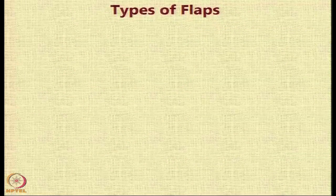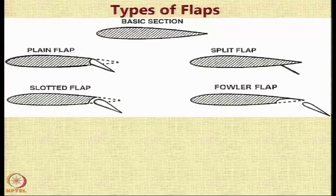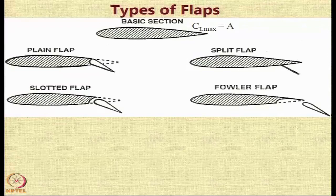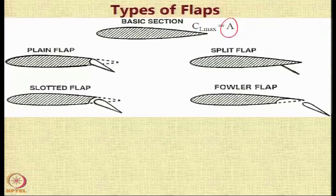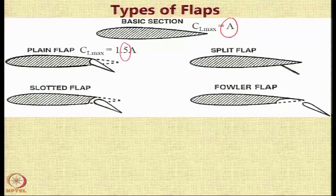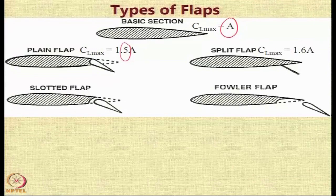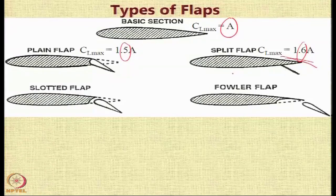There are many different types of flaps and each has a different effect on the lift coefficient. These are some of the standard flap sections. If you have a basic wing whose CL max is equal to A as a baseline, with a plain flap you can have 50% higher value of CL. With a split flap you can get slightly better — up to 60% higher — because we are not spoiling the flow on the upper surface; we are only creating a deflection of the flow on the downward surface.